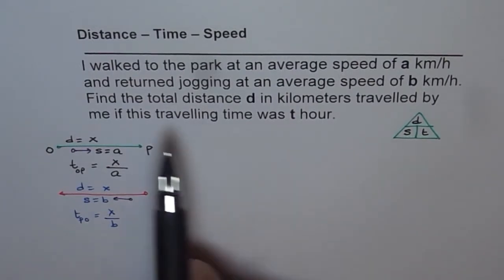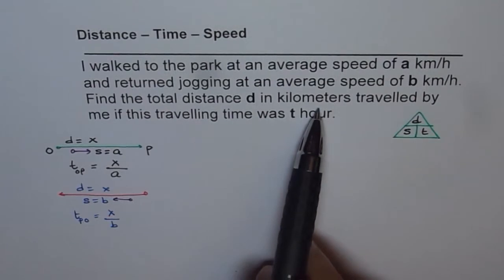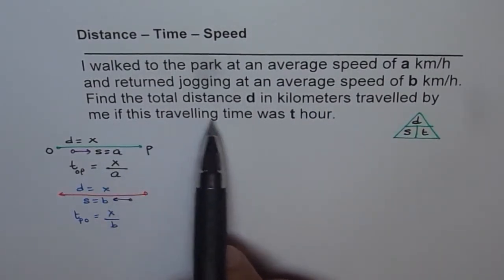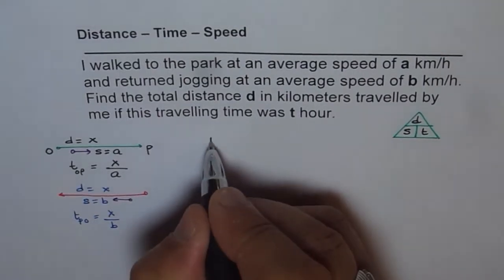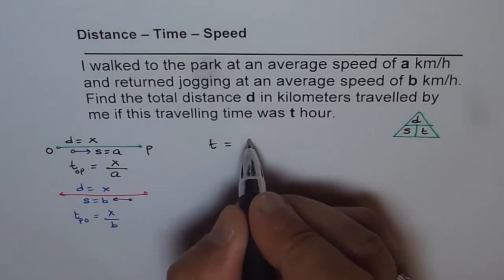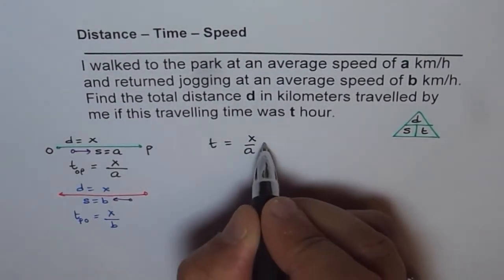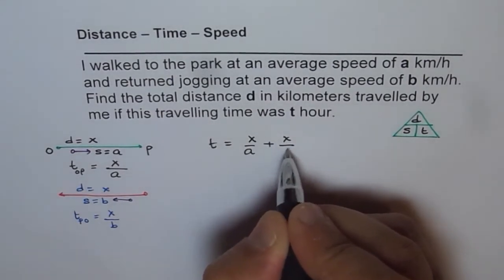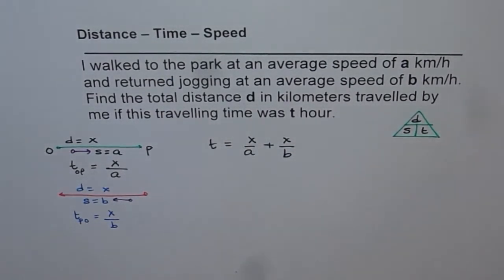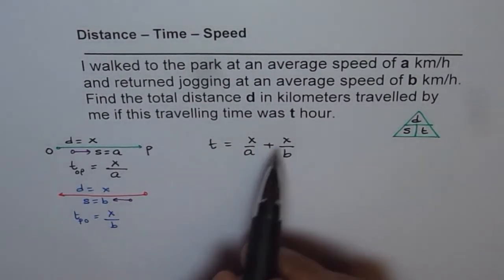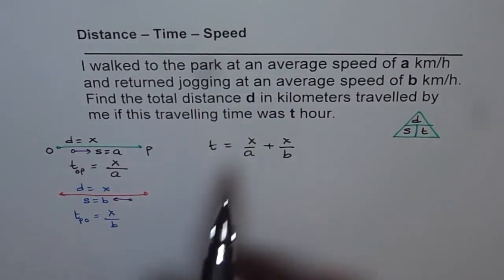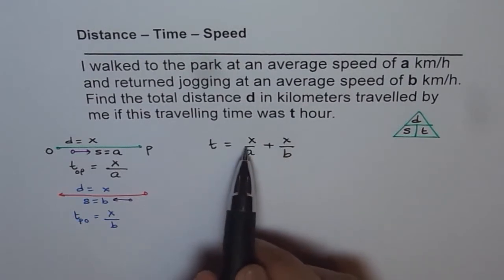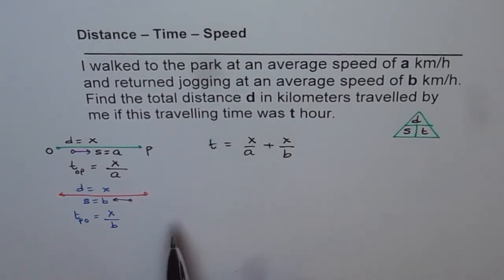When we say the total travelling time was T hours, that means T equals the sum of these two times: X over A plus X over B. Now X is the one-way distance. The total distance D will be 2 times X. So let us find X from the time equation and then multiply by 2 to get the total distance.